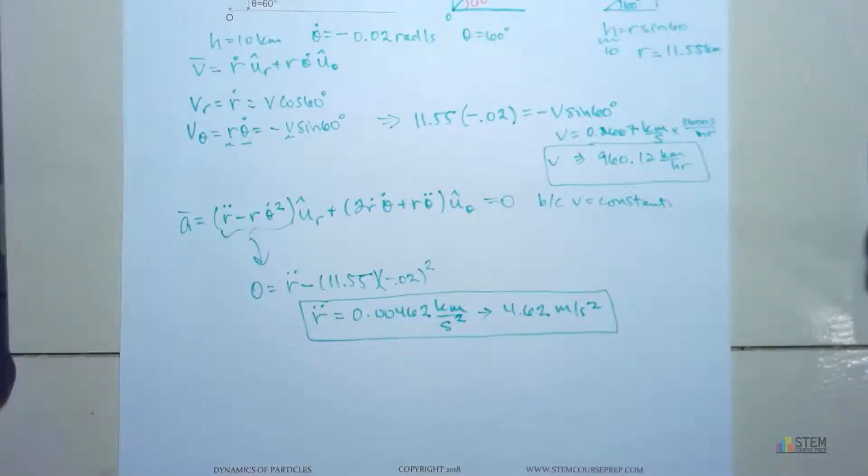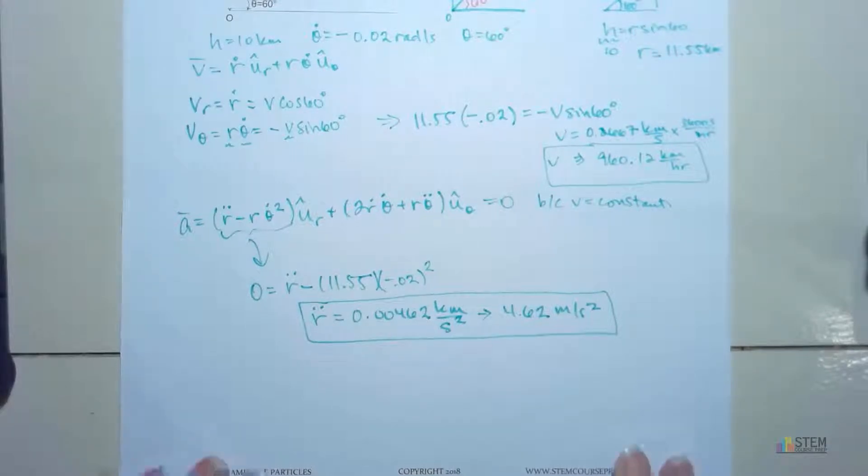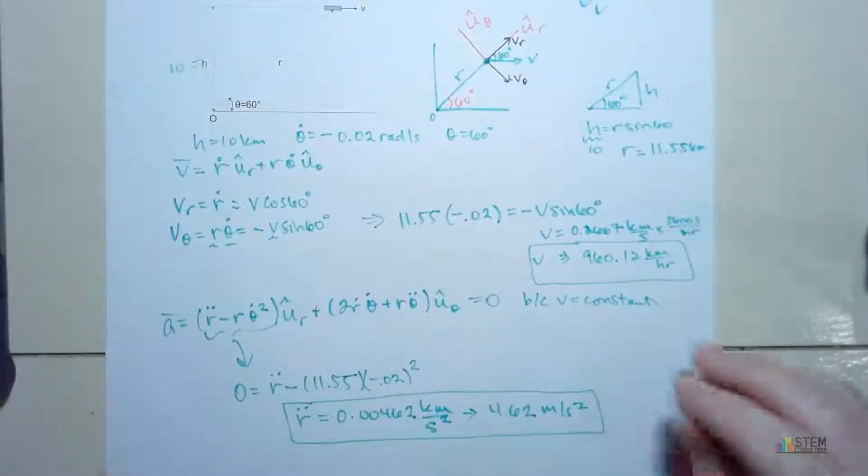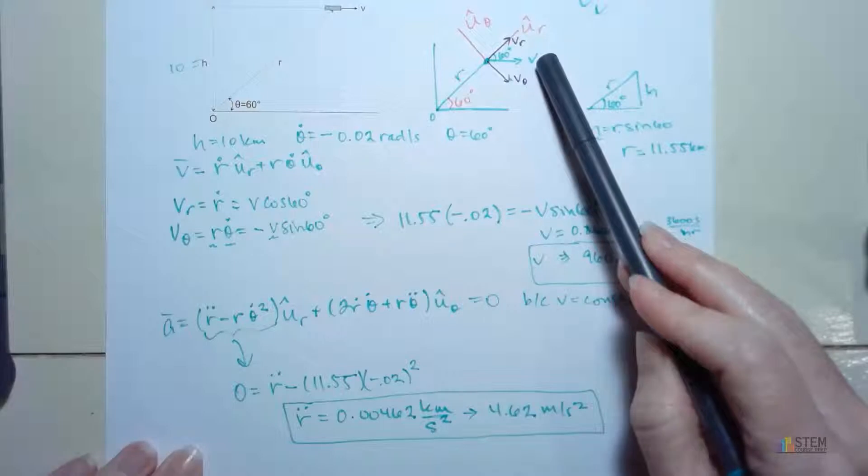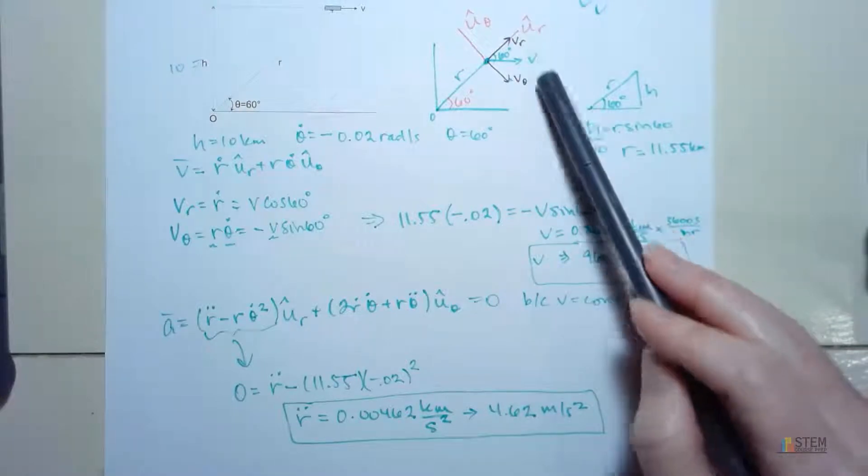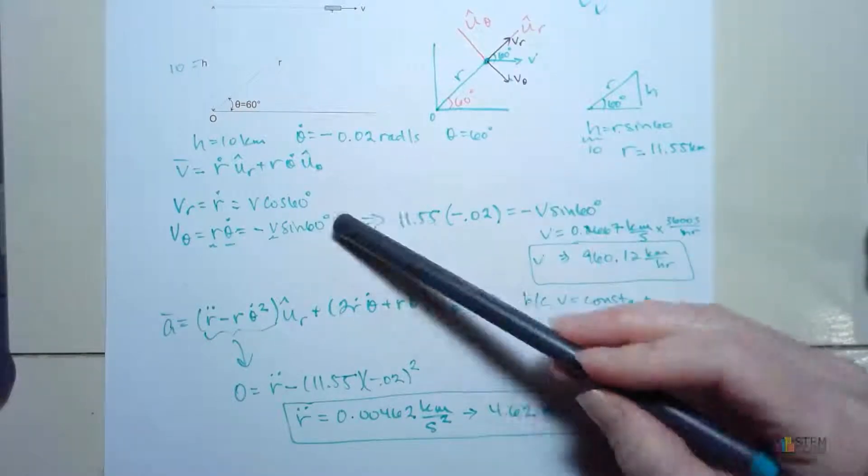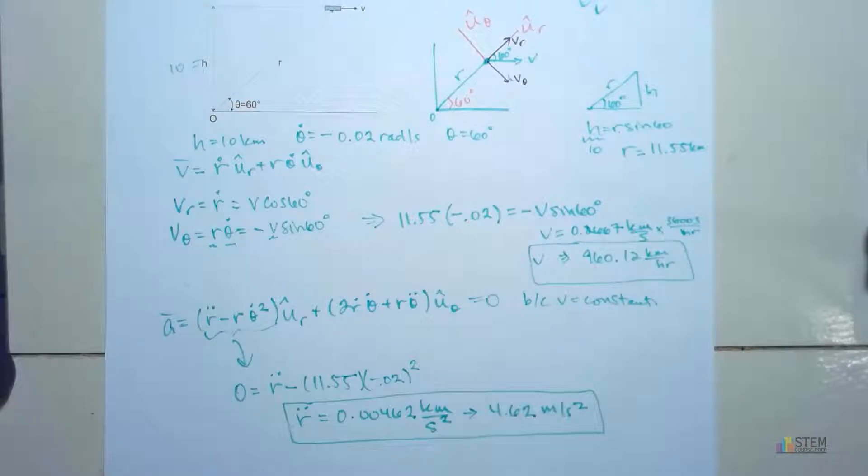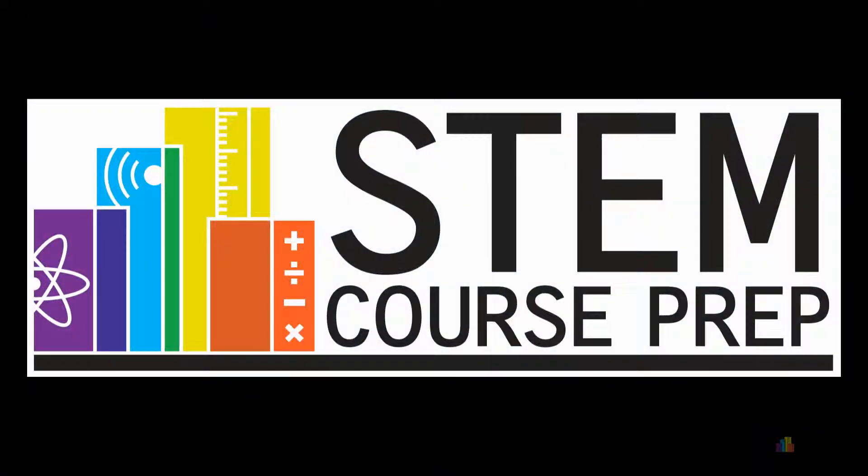So I hope you like that problem. And the main point here that I want to make sure you get is that you can split up these velocity and acceleration components, just like we did here. So break it down into the two components. And then that gives you an extra piece of information. I'll see y'all for another example in the next one. Thank you.